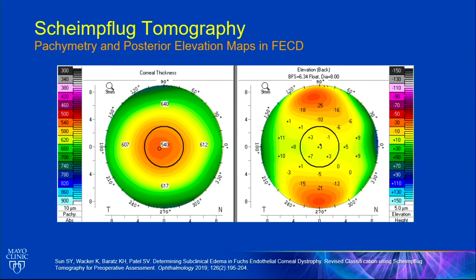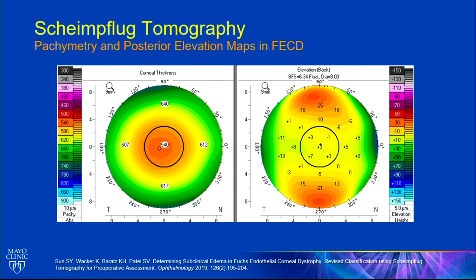These are the tomographic maps from the Scheimflug imaging device, shown here for a normal cornea. The corneal thickness map is derived from the elevation maps of the anterior and posterior surfaces. A normal corneal thickness map has circular or very slightly oval isopacks — lines that join points of equal thickness — that are pretty concentric and parallel to each other. The thinnest point of the cornea should be central or very slightly infratemporal. The posterior elevation map is quite homogenous in a normal eye, with no obvious abnormality.